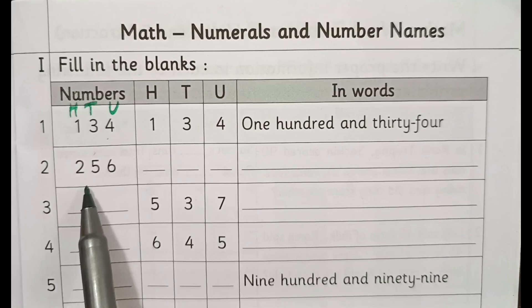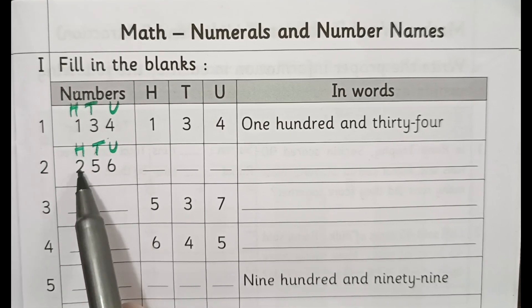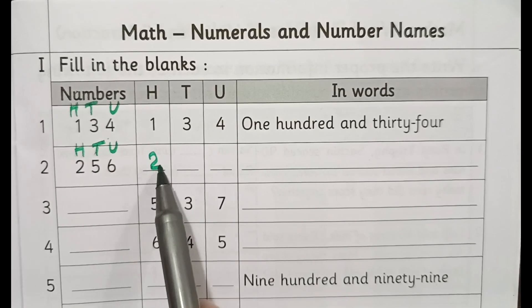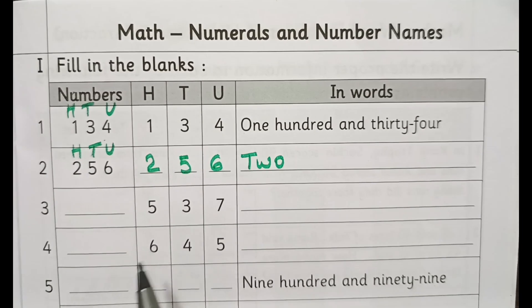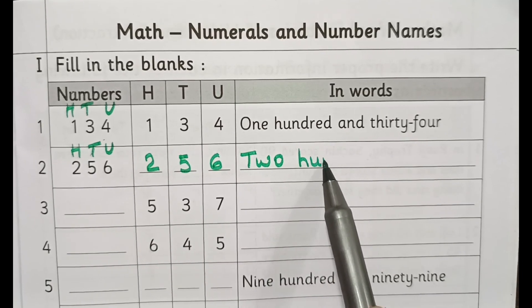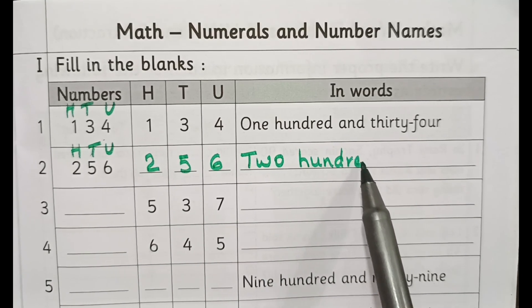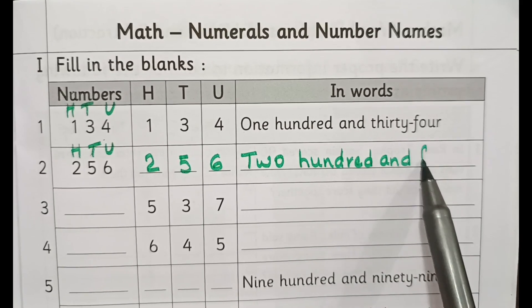256. Write the place values like this. Here, two hundreds, five tens and six units. Two hundred and fifty-six.